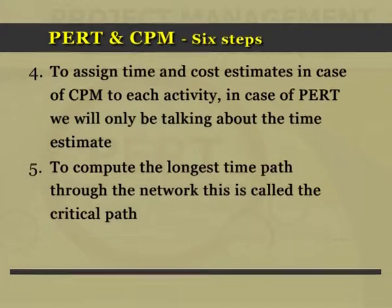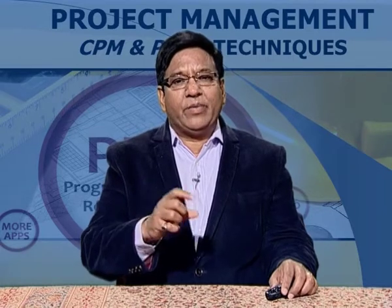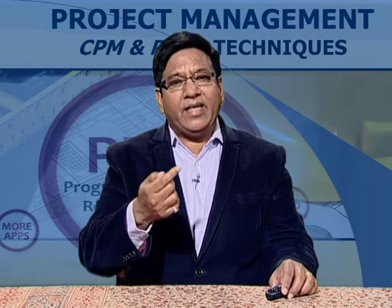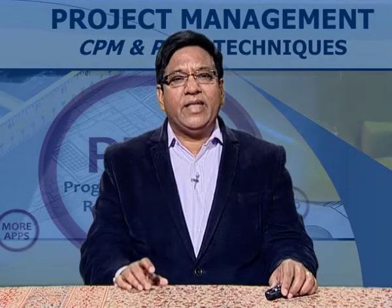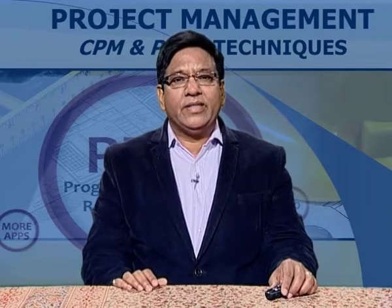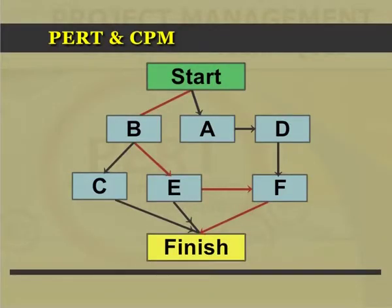Activities are identified, time estimates are given, precedence relationships are established, the network is drawn, and the path with the longest time is chosen as the critical path. Step six: use the network to help plan, schedule, monitor, and control the project. The critical path is very important since any delay in these activities can delay the completion of the entire project.